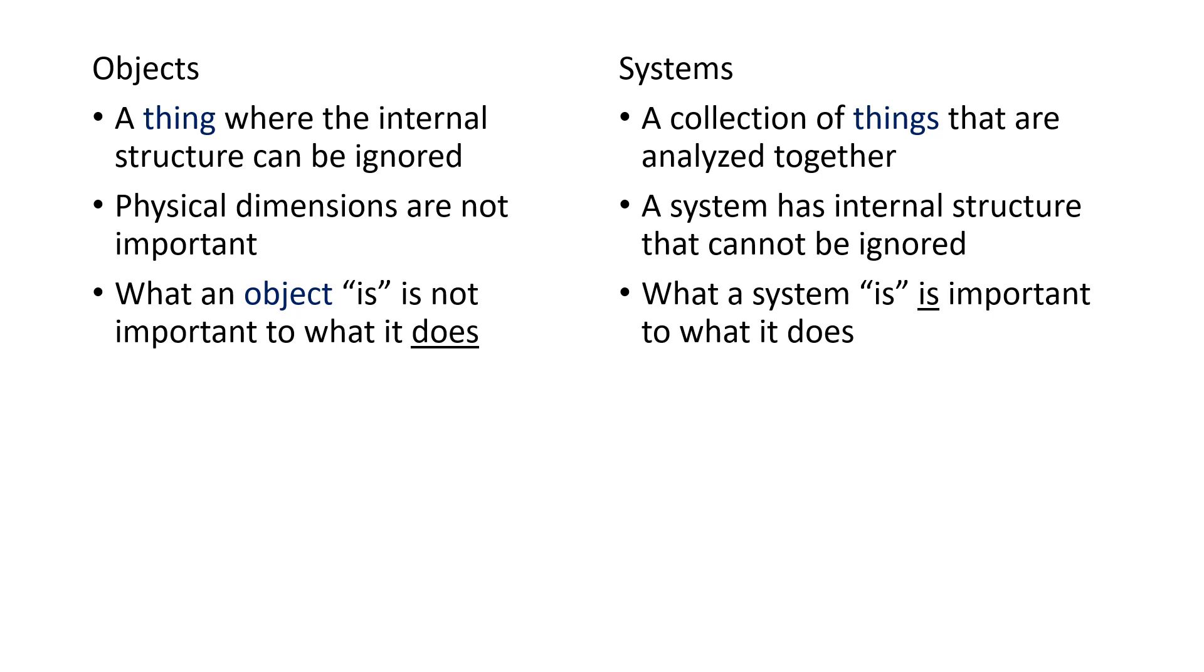A system, on the other hand, is a collection of things that you are analyzing together. A system has internal structure that cannot be ignored, and what a system is, is important to what it does.